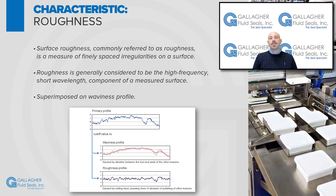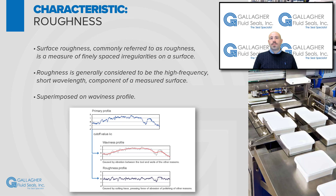The final characteristic is surface roughness, which is the measurement of the finely spaced irregularities on a measured surface. Surface roughness, commonly referred to as just roughness, is generally considered the high-frequency, short-wavelength component of a measured surface. The roughness profile can be considered superimposed on the waviness profile.